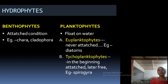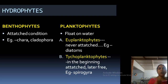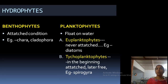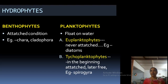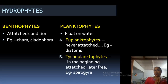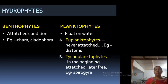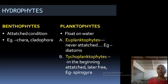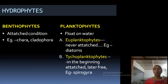The first category is hydrophytes. Any organism growing in water is known as a hydrophyte — plants growing in water. Here, algae growing in water are hydrophytes. There are two categories of aquatic algae: bentophytes and planktophytes. Bentophytes are those algae that are attached in water — attached to rocks, to shells of other organisms, or anywhere they are fixed.